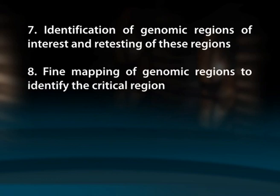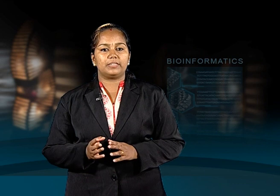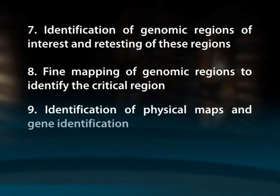Eighth, fine mapping of genomic regions to identify the critical region. This can be done in two ways, either to increase the saturation of genotyping of the region or analyze the data for linkage and association or by examining the region of interest for genes that might have a biological function related to the trait. Ninth, identification of physical map and gene identification.